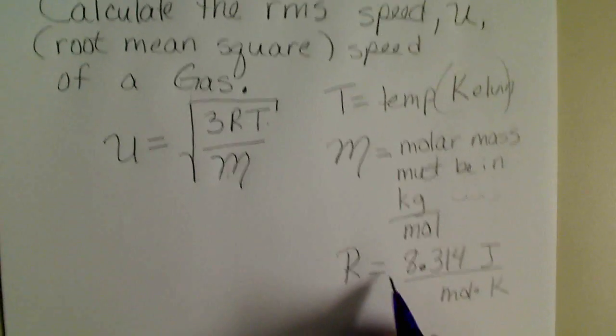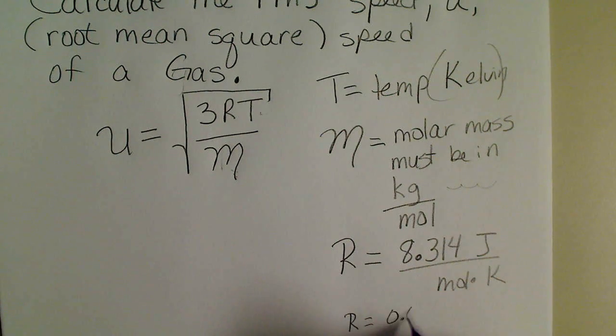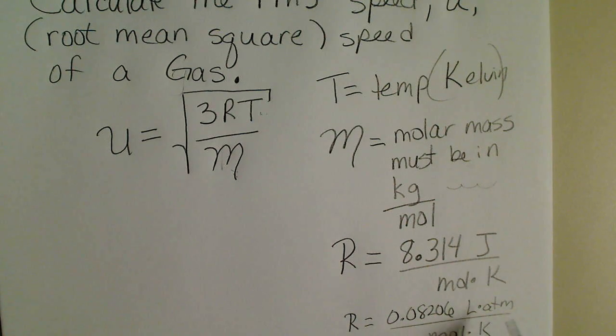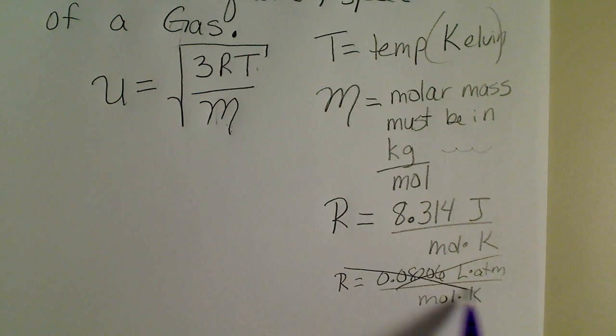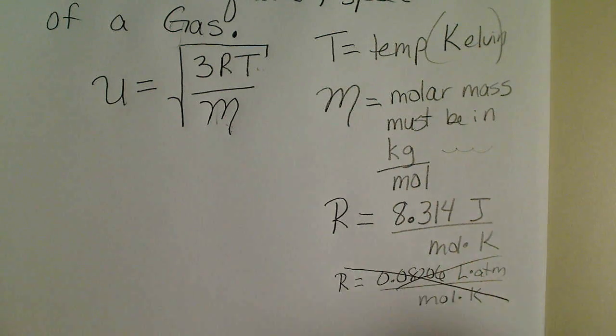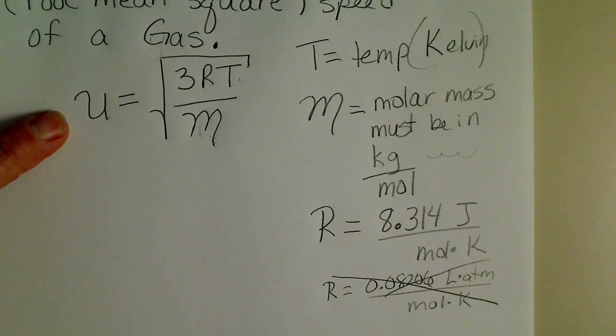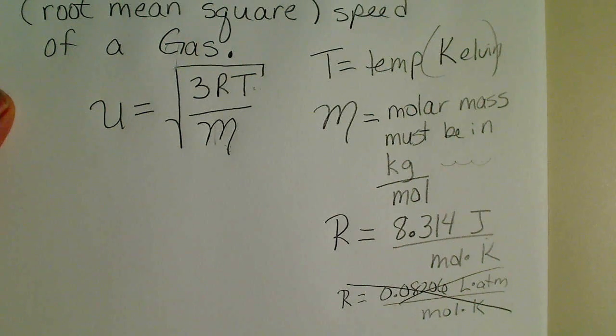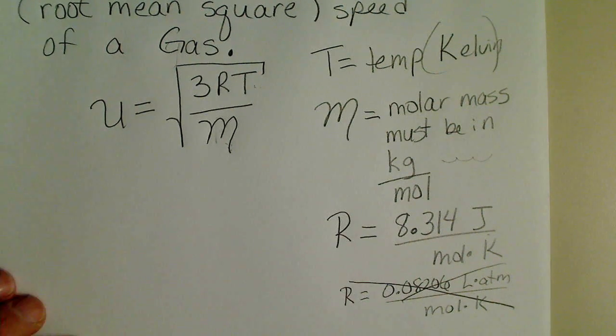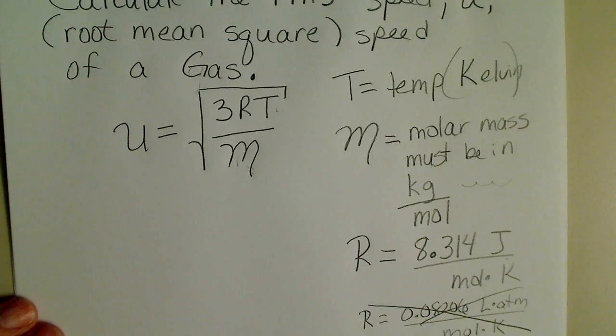You may have used an R value that was 0.08206, and that is a liter atmosphere energy unit per mole per degree Kelvin. So it's very common in introductory chemistry courses to use this R value. When we calculate the speed of a gas, it's essential that we use the correct gas constant for that.